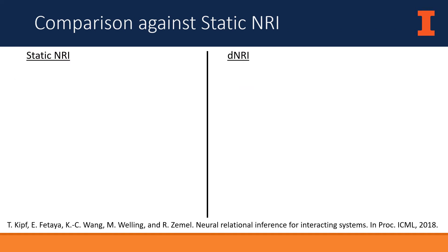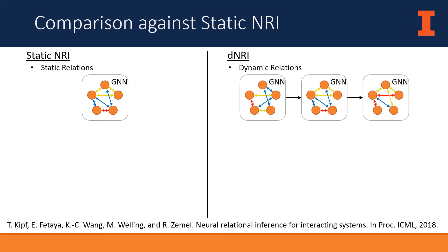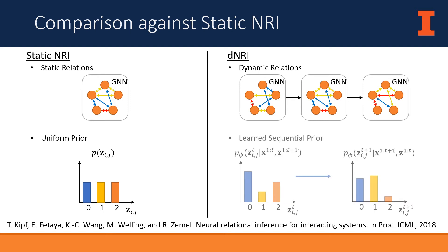Our model is an extension of Neural Relational Inference by Kipf et al. from ICML 2018, hereafter referred to as static neural relational inference. This model produces one set of relation variables used at every point in time by the decoder. DNRI, on the other hand, produces a separate distribution over variables at every point in time, allowing increased modeling flexibility when relations are expected to change over time. Additionally, static NRI uses a fixed uniform prior, while DNRI uses a sequential prior learned from the data.